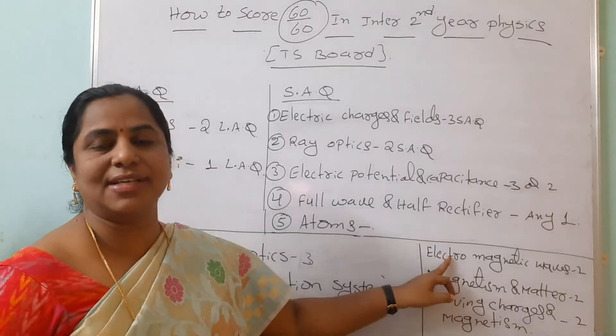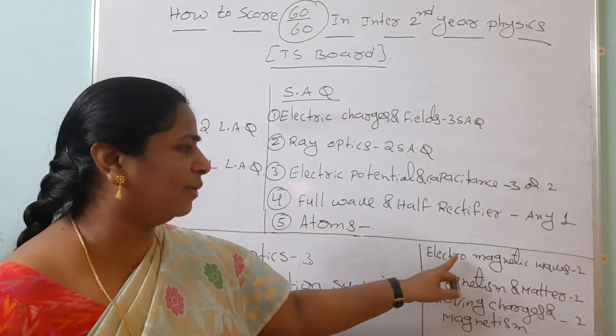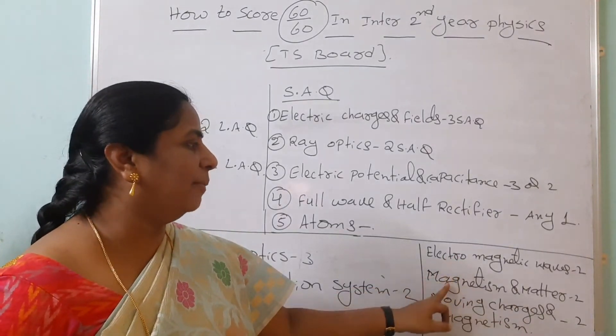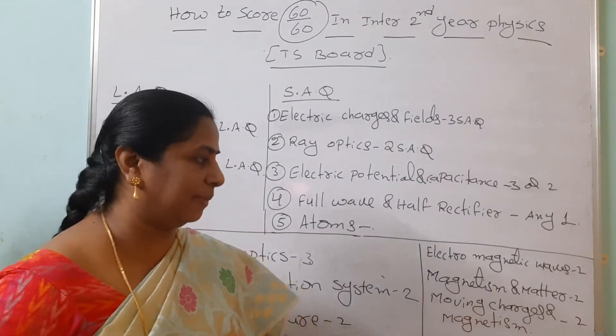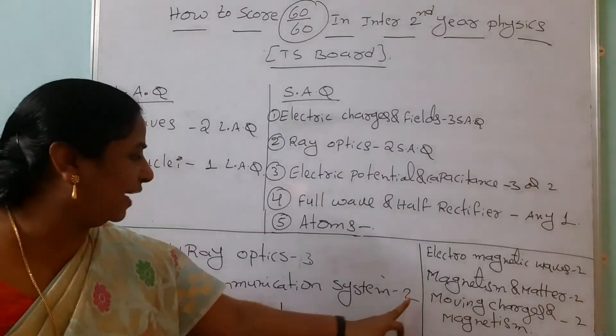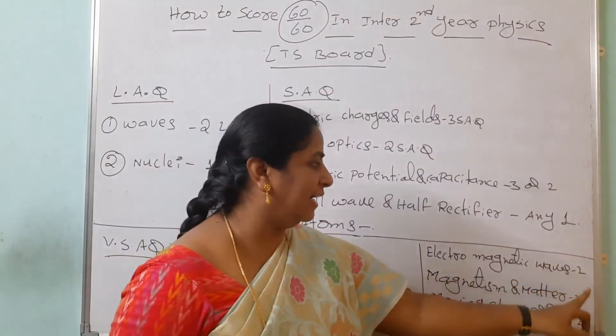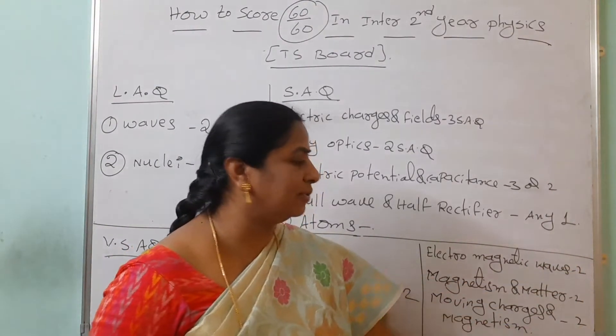Electromagnetic waves is also a very interesting and easy chapter. Only ten VSAQs are there. From that you are getting two. Magnetism and matter also two. Moving charges and magnetism also two. So three plus two five, five plus two seven, seven plus two nine, nine plus two eleven plus two thirteen.